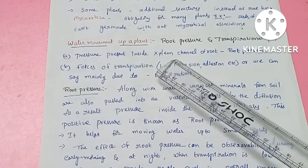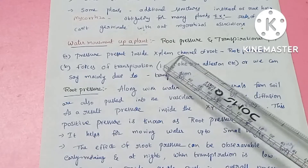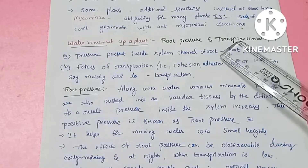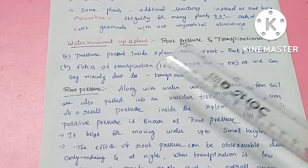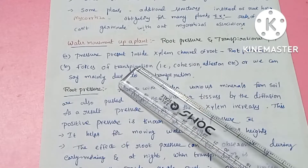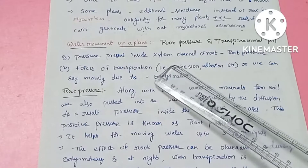There are two processes involved in water movement up a plant. One is root pressure and one is transpiration pull. Root pressure is created in the xylem channel.